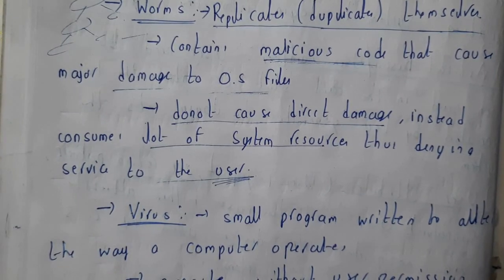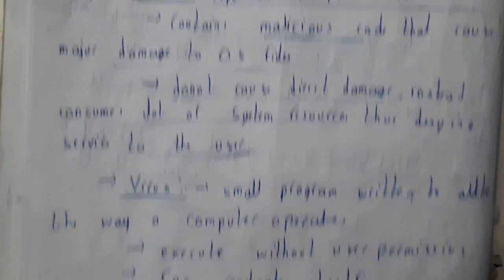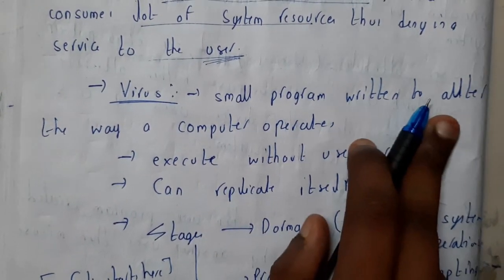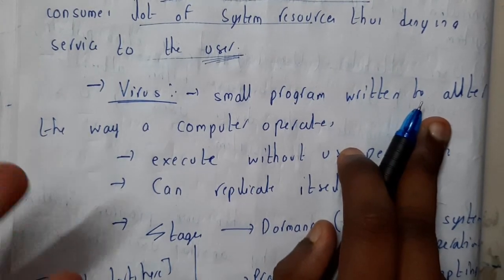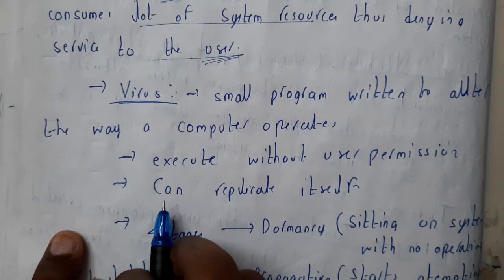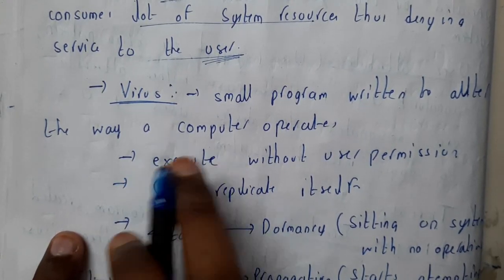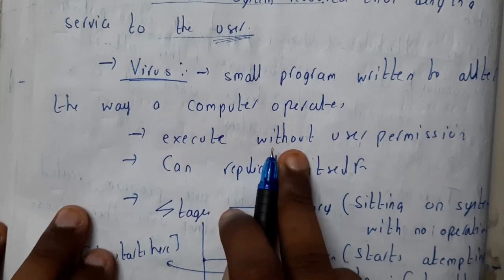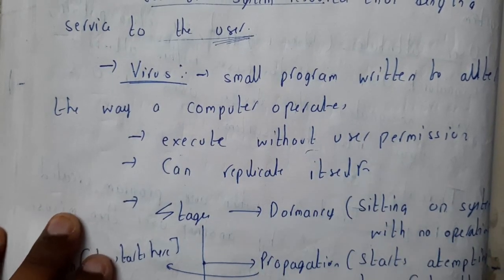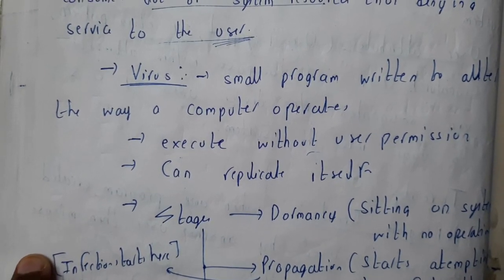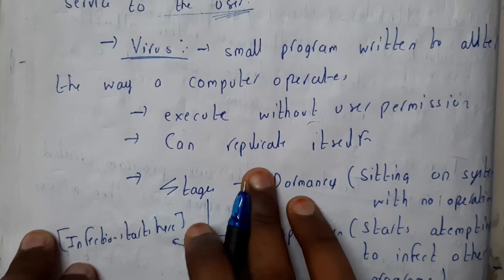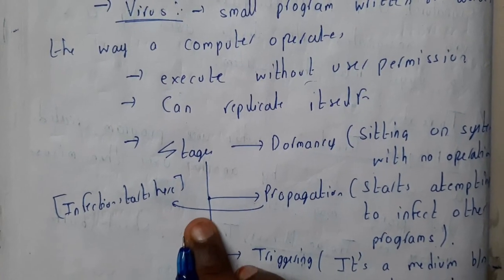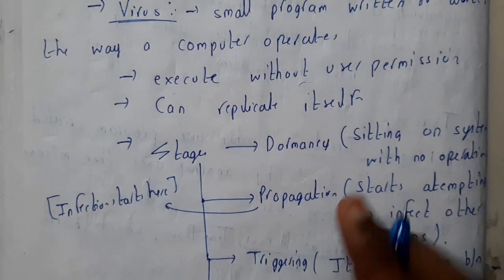Viruses are small programs written to alter the way a computer operates. These viruses can change execution permissions and execute without user permission. They can open files, transfer data, copy files — they can do anything they want. Viruses can also replicate themselves. There are four stages for viruses.